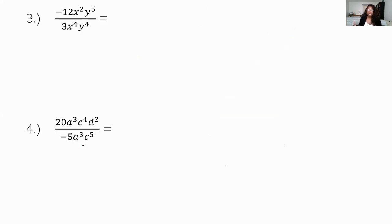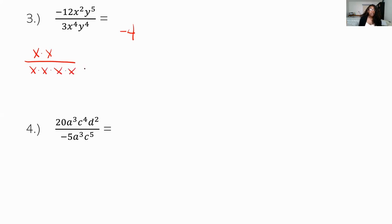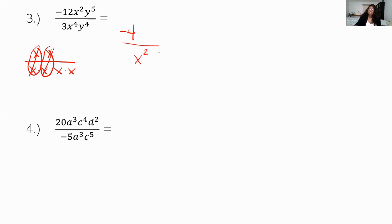Now let's look at example 3: negative 12x²y⁵ divided by 3x⁴y⁴. First, divide the coefficients: negative 12 divided by 3 gives negative 4. For the x terms: x squared over x to the fourth — writing it out, there are two x's in the numerator and four x's in the denominator. After pairing and canceling, two x's remain in the denominator.